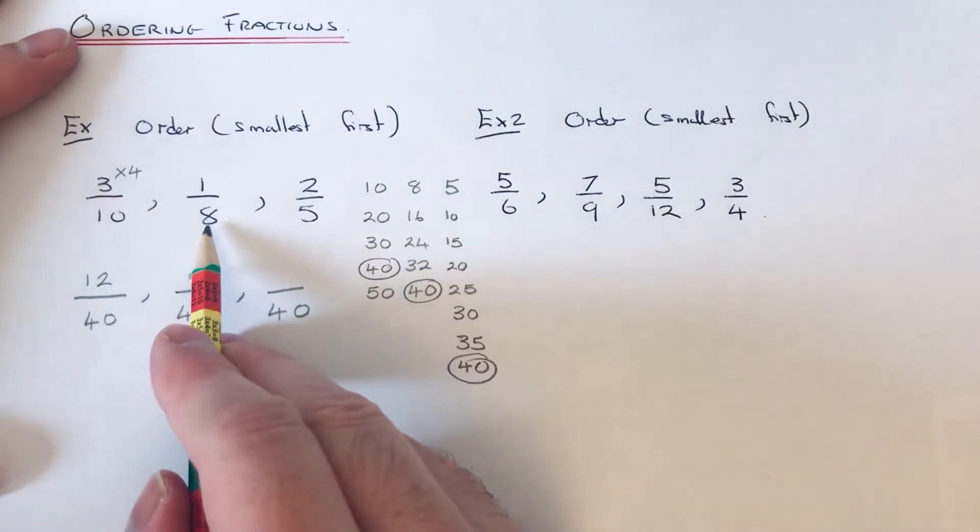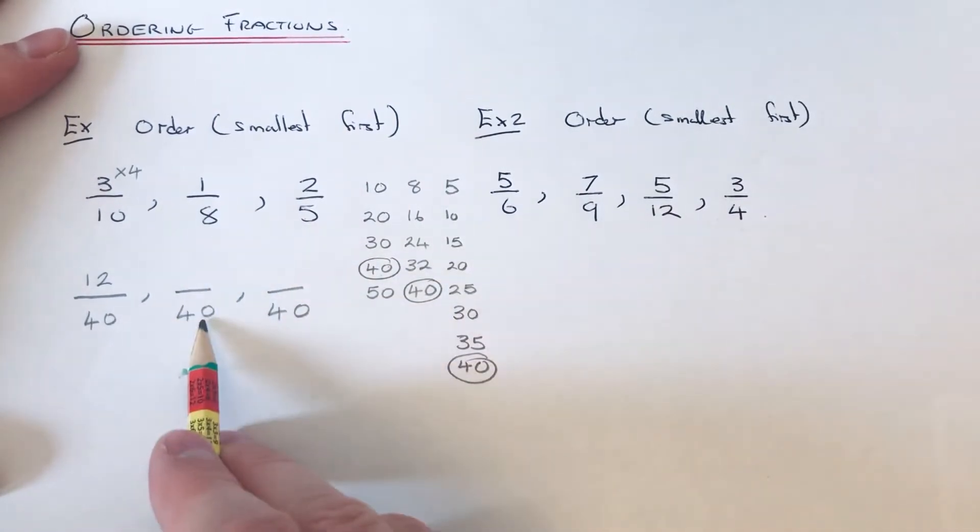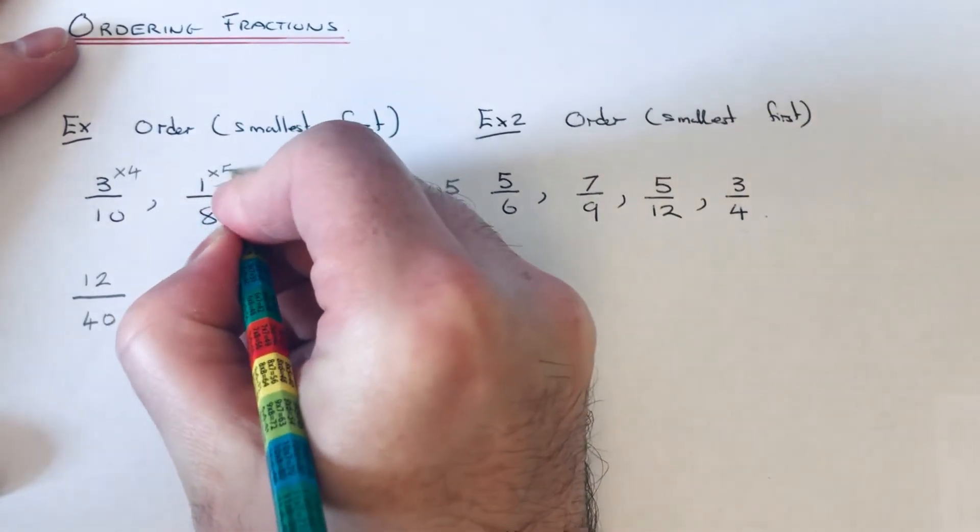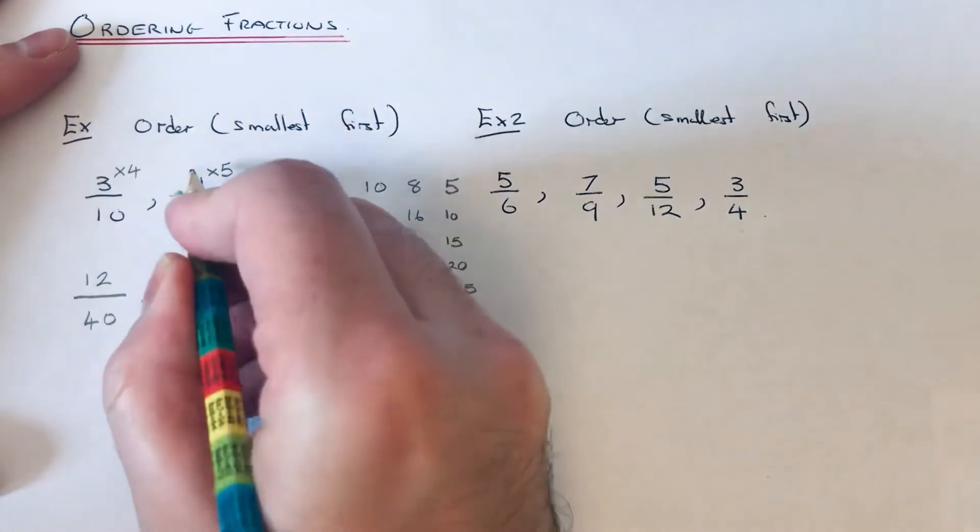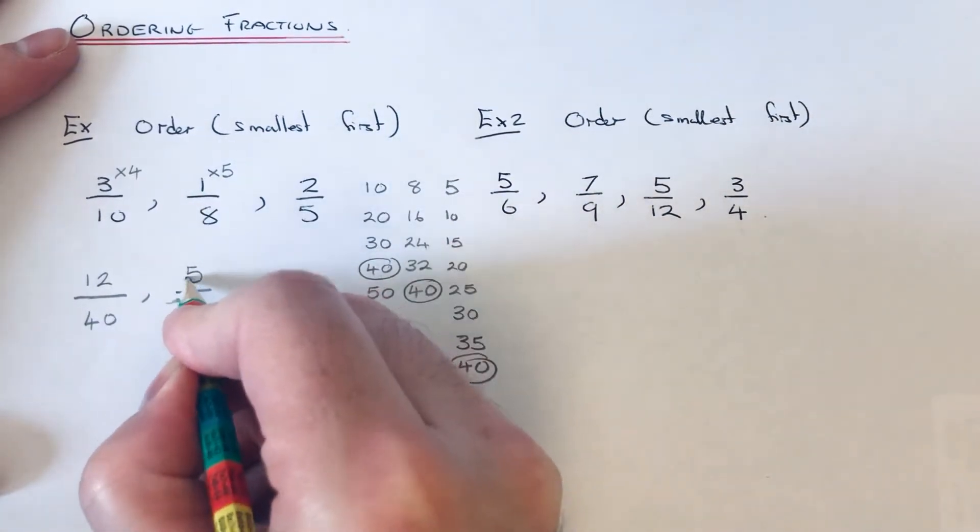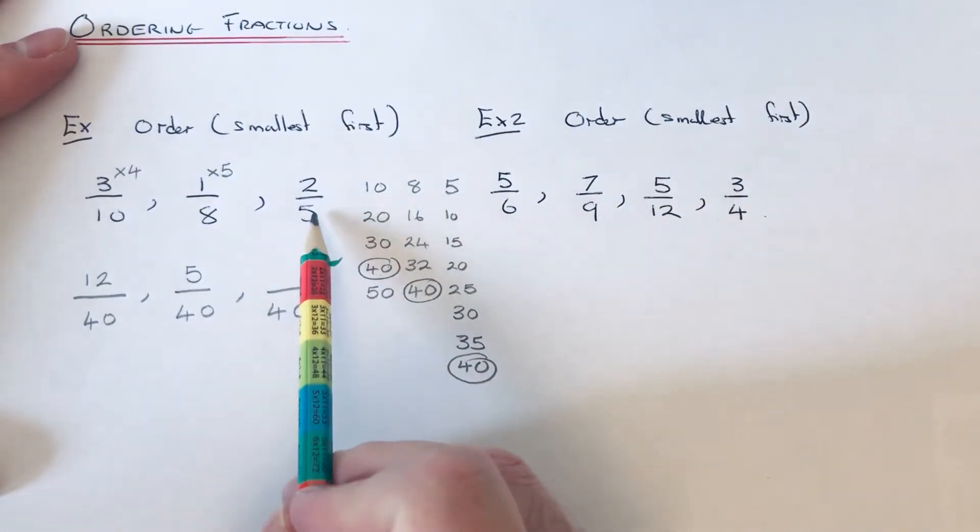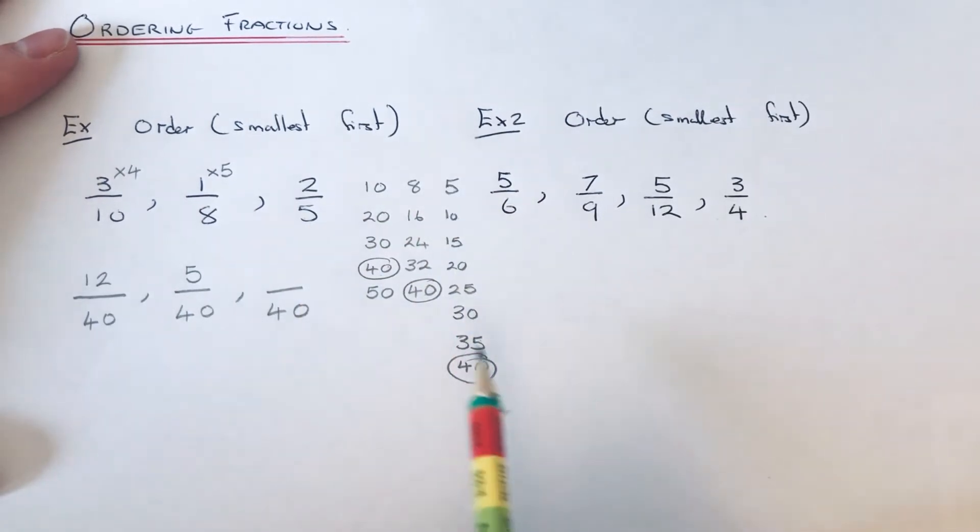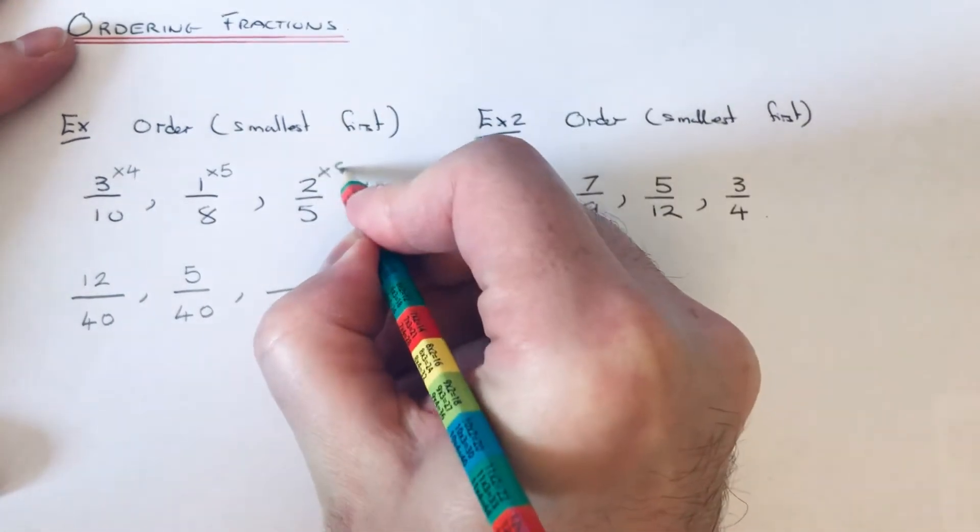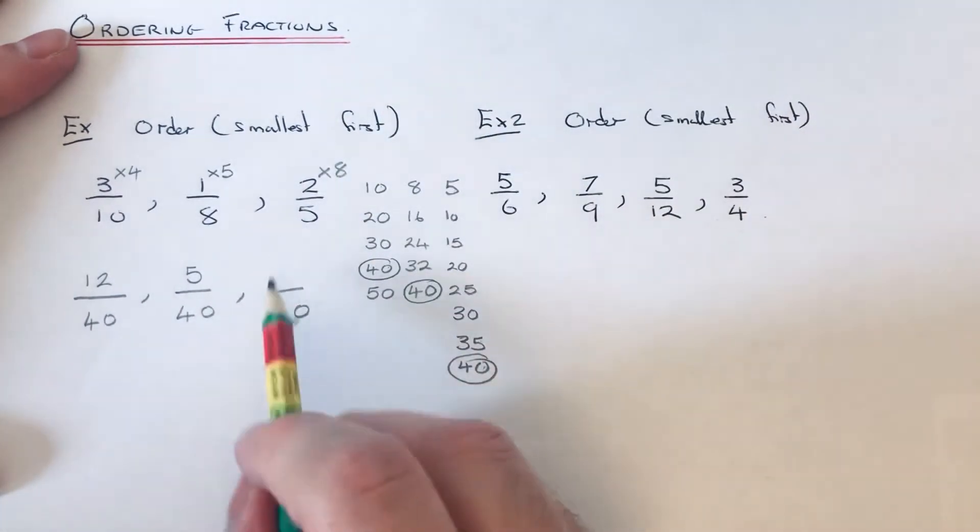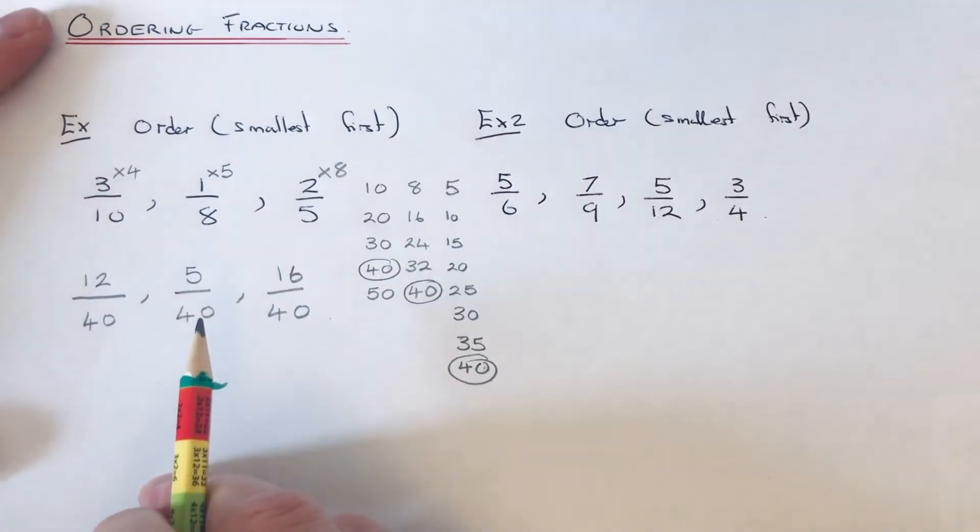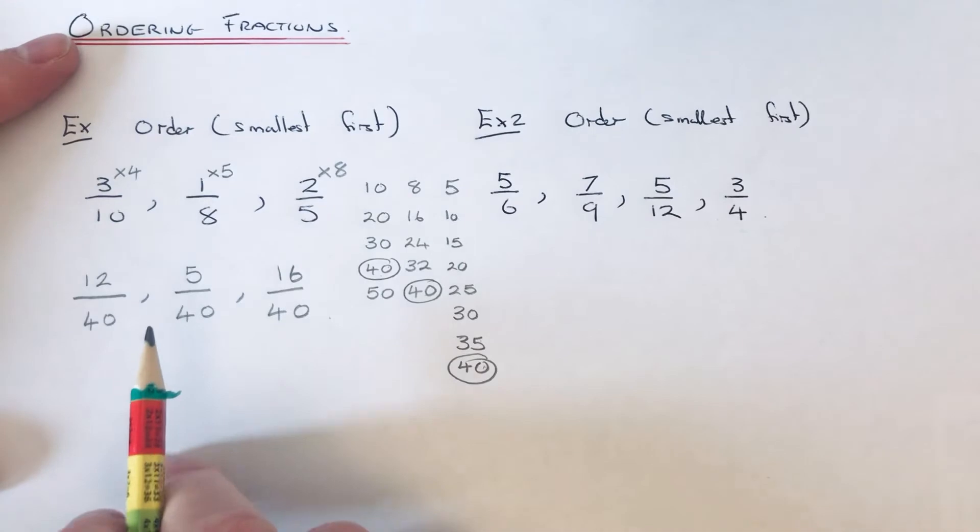Let's change 1/8 now. How many times did 8 go into 40? It went 1, 2, 3, 4, 5. So we need to times our top number by 5. 1 times 5 is 5. Our final fraction: how many times did 5 go into 40? 1, 2, 3, 4, 5, 6, 7, 8. My final fraction needs to multiply by 8, so 2 times 8 is 16.